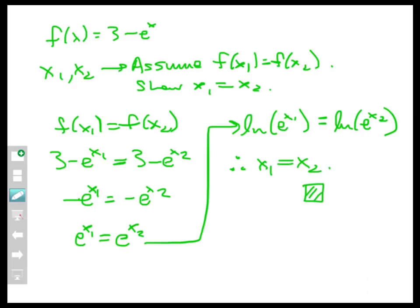Working with the contrapositive is probably the approach you'll see used most to prove a function is injective, because the contrapositive provides structure that can be disassembled using algebra or properties or definitions. Generally speaking, it's easier to work with equations, as in the contrapositive, than with non-equations — things not being equal — as happened in the direct proof.